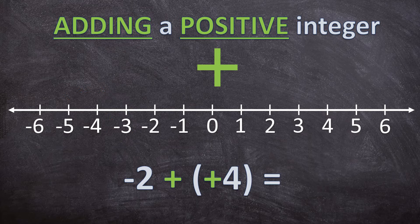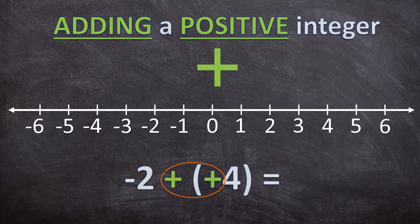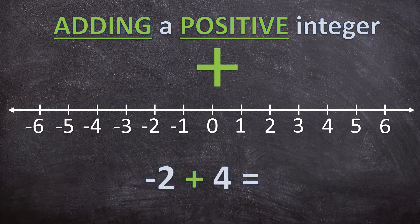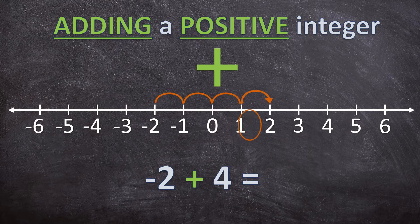Let's look at this one. It may seem a bit different, but it's actually exactly the same. Positive 4 is exactly the same as 4. So if we add a positive number, we will just add the number. Let's look on the number line — negative 2 plus 4 is 2.